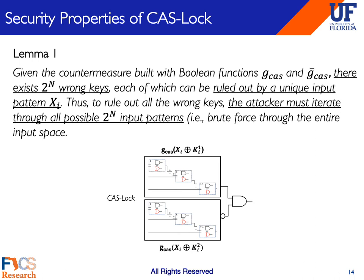Now we will elaborate on some of the security properties of CasLock. We'll start with Lemma 1, which specifically proves the SAT-resistance of CasLock under any arbitrary construction of the Boolean functions G-cas and G-bar-cas. By arbitrary, I mean in the cascade of gates in G-cas and G-bar-cas, you can vary the AND and OR gates to vary the output corruptibility. But regardless of which construction you choose, CasLock maintains maximum SAT-resistance. If a SAT-attack was conducted on CasLock, the attack would be forced to go through all 2^n possible input patterns to rule out all incorrect keys—effectively reducing SAT-attacks to brute force attacks.